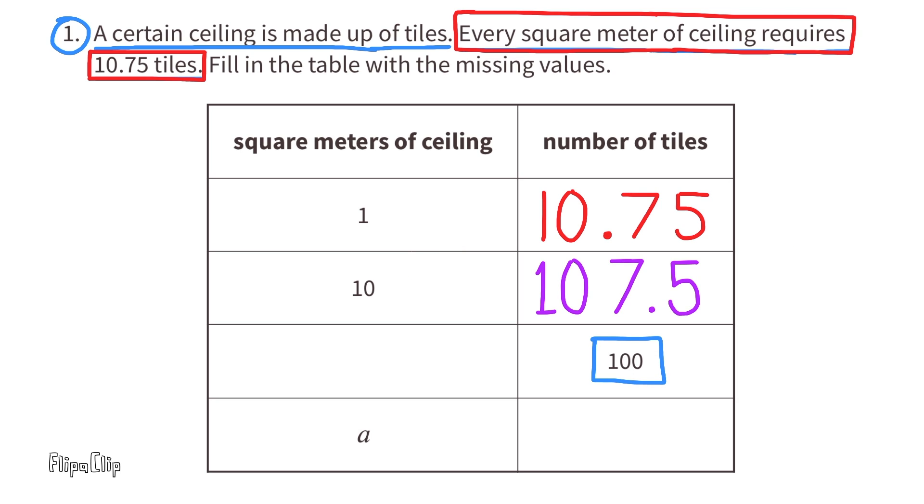To find out how many square meters of ceiling would hold 100 tiles, we need to divide 100 by 10.75, and that's approximately 9.3 or 9 and 3 tenths. So for 9.3 square meters of ceiling, it would take approximately 100 ceiling tiles.